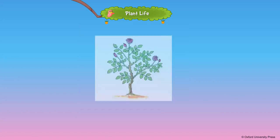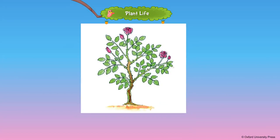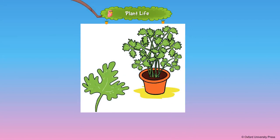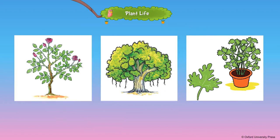This is a shrub. A shrub has a woody stem. This is a herb. A herb has a soft stem.